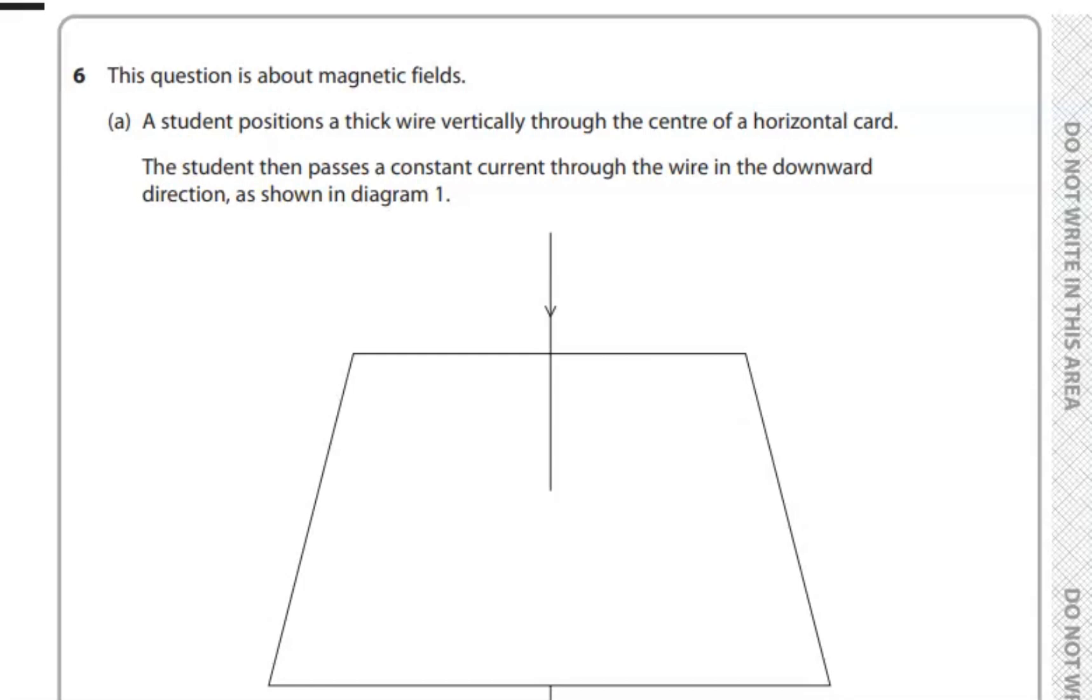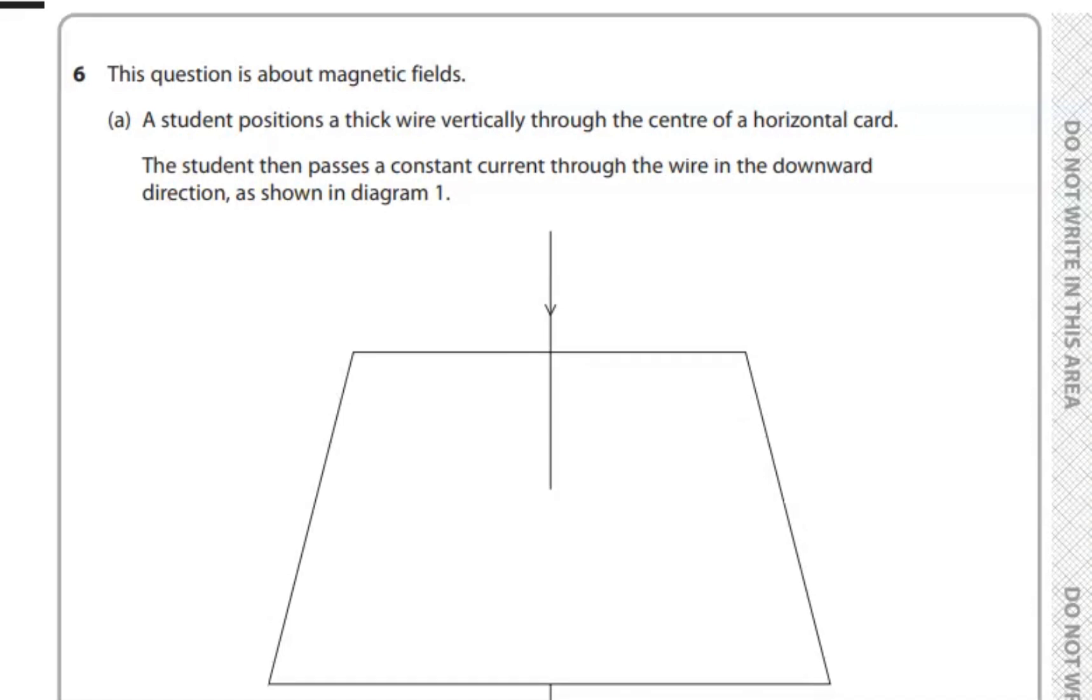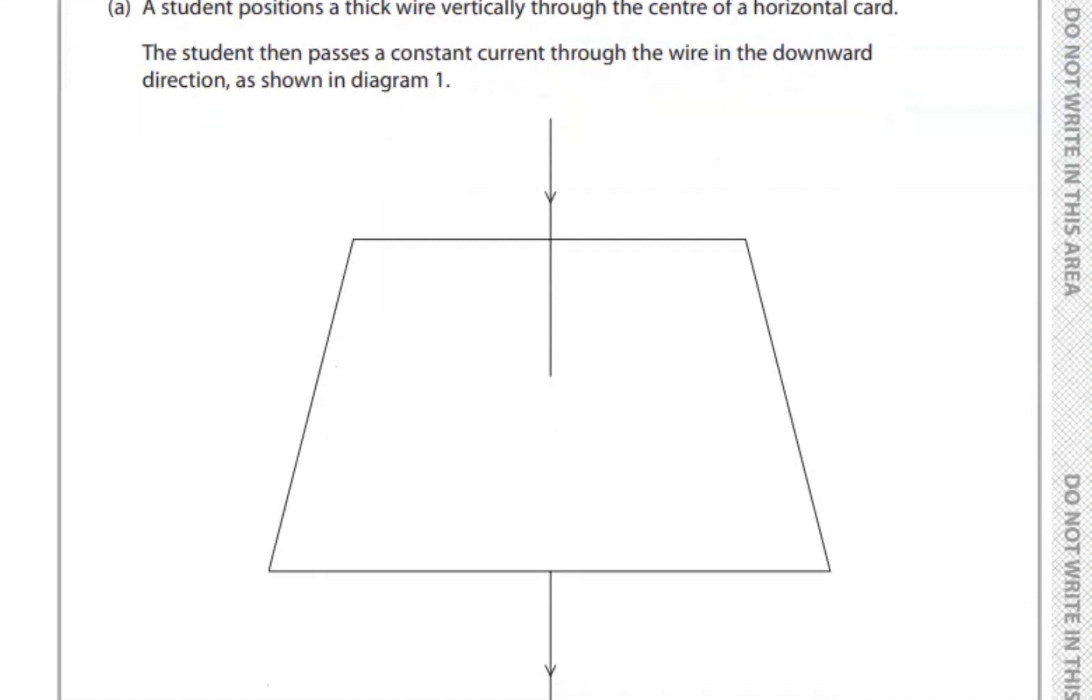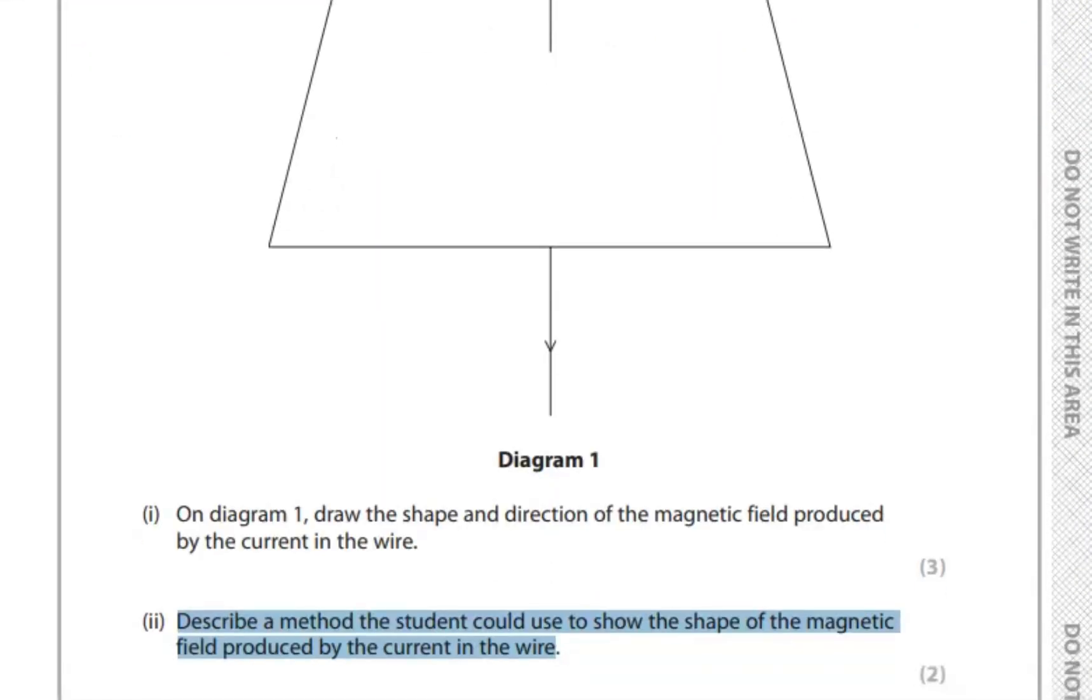A student positions a thick wire vertically through the center of a horizontal card. The student then passes a constant current through the wire in the downward direction as shown in the diagram.